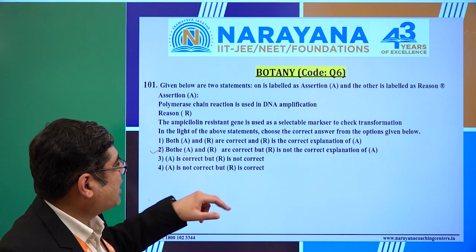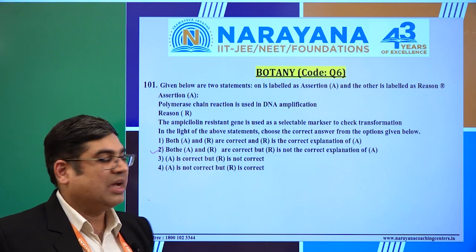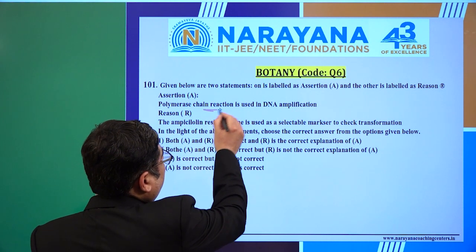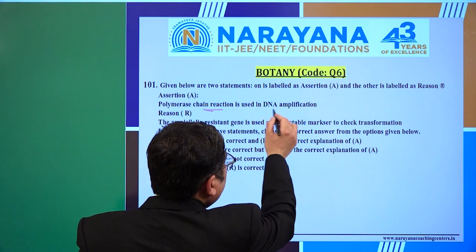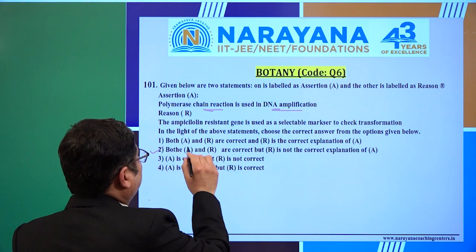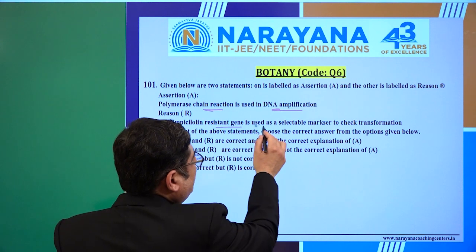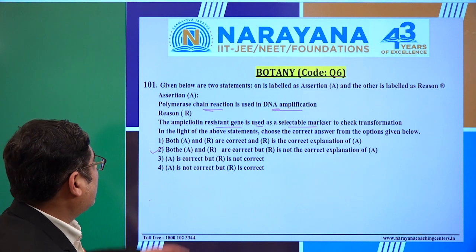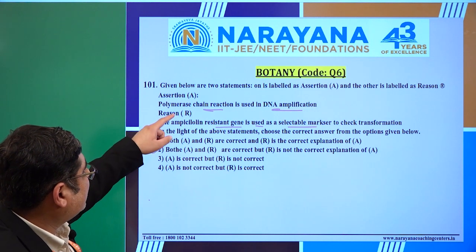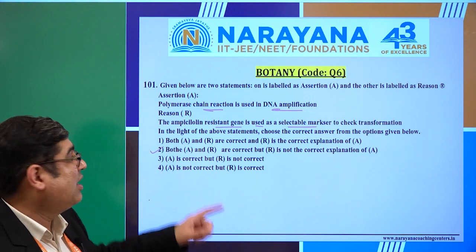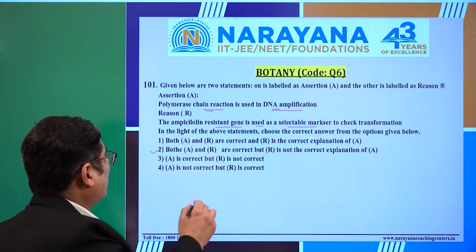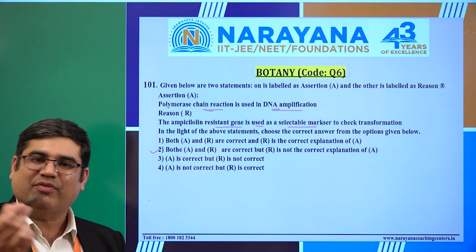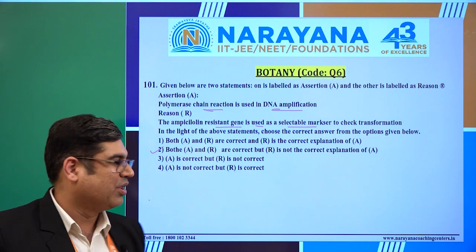In the light of the above statements, choose the correct answer. As you can see from the first statement, PCR — the Polymerase Chain Reaction — is absolutely used in DNA amplification. At the same time, the ampicillin-resistant gene can be used as a selectable marker. So both statements are correct, but the assertion does not give the correct reason in accordance with that statement. Therefore, the second option is absolutely correct. This is an NCERT-based question.